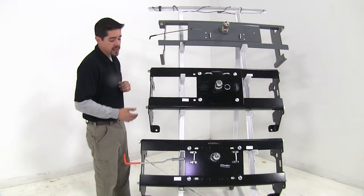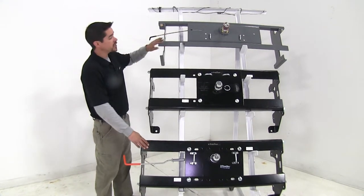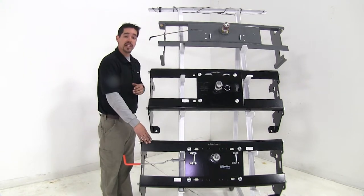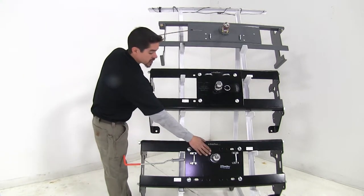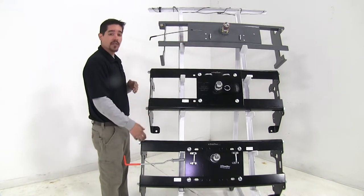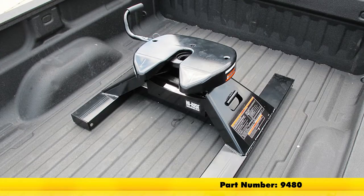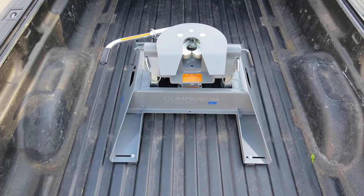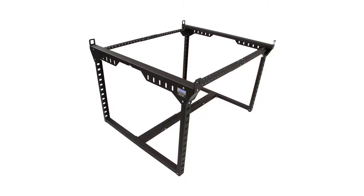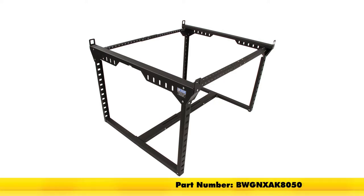Now one of the really big benefits with our draw-tight hide-a-goose, and our B&W turnover ball, is the versatility that you get when you get them. Not only do you get a gooseneck hitch, that you can tow your gooseneck trailer with, but there is adapters available for both the draw-tight and the B&W, to convert your gooseneck into a fifth wheel, or with the B&W, there is a ladder rack that will leave the side rails of your bed fully open.